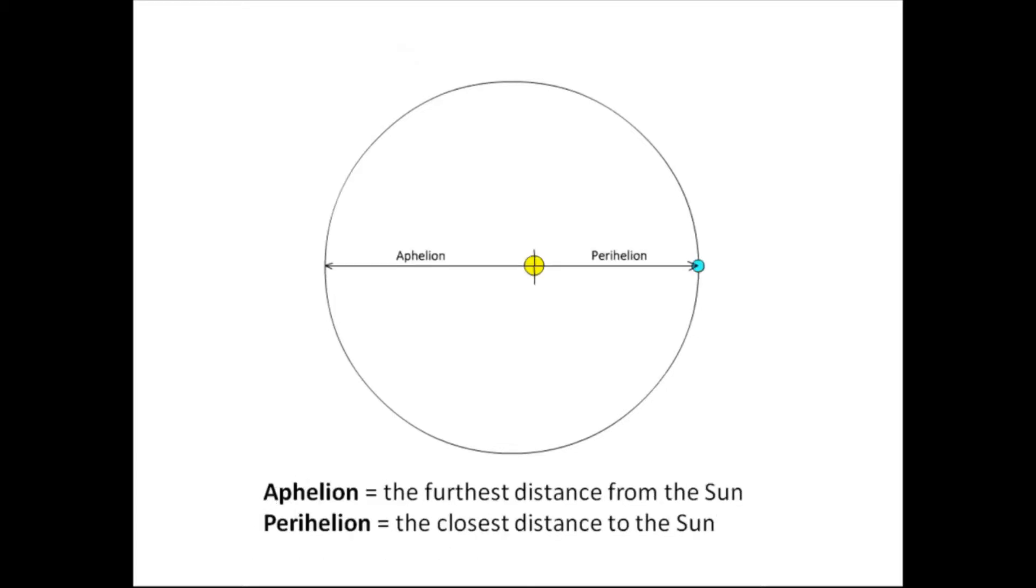If we look at this diagram here, we'll see that there's an ellipse, and there's the sun at one of the foci. And one of these distances is bigger than the other one. There's aphelion, which is the furthest distance from the sun, which I believe for the Earth is about 154 million kilometers. And perihelion, which for the Earth, I believe is about 146 million kilometers.